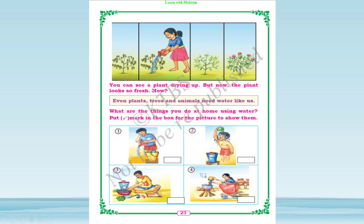You can see a plant drying up, but after watering it looks so fresh. Kids, remember that plants also need water for their growth and for food preparation. The process of preparing food in plants is called photosynthesis, which you will be studying in your higher classes. For now, remember that water is required for plants for their growth.